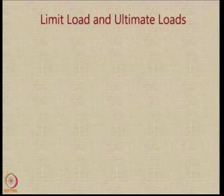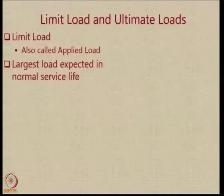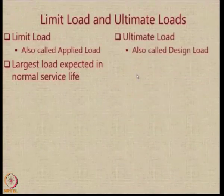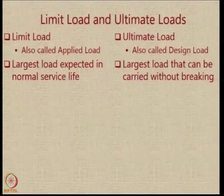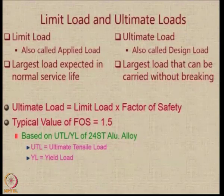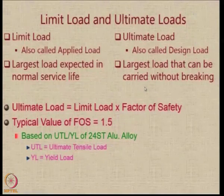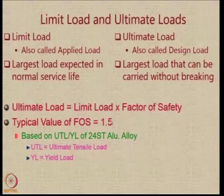We need to understand the difference between 2 important terms: the limit load and the ultimate load. The limit load, also called the applied load, is essentially the largest load that you expect the aircraft's component to sustain during its normal service life. The ultimate load, or the design load, is the largest load it can take without breaking. In between the two is the factor of safety, so the ultimate load is factor of safety times higher than the limit load. The typical value of factor of safety for aircraft is 1.5, though values as low as 1.1 or slightly higher are also used. This value comes from the ratio of the ultimate tensile load and the yield load of standard aluminum alloy used in the aircraft.